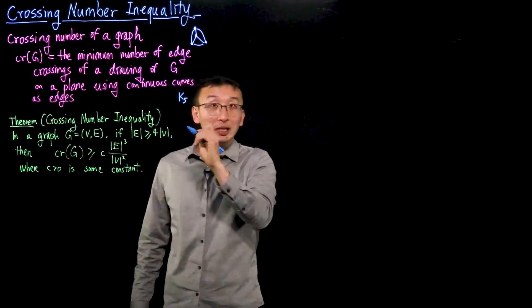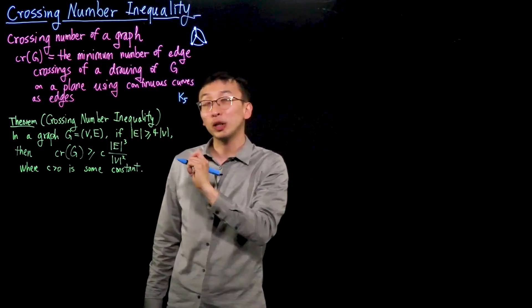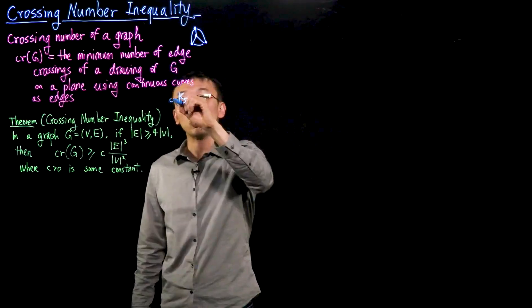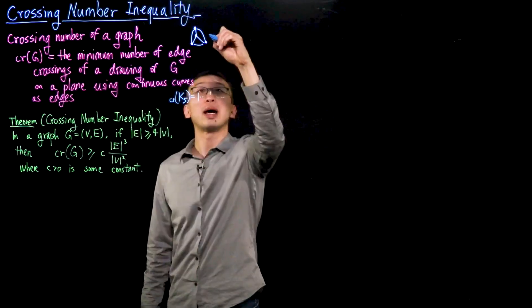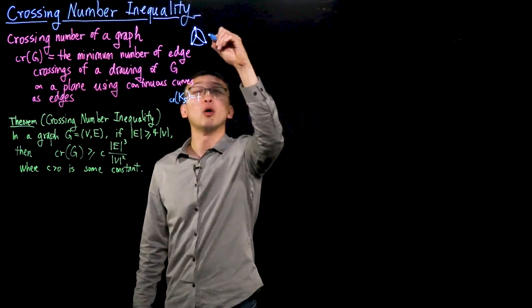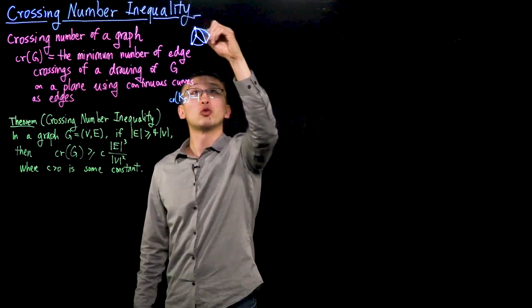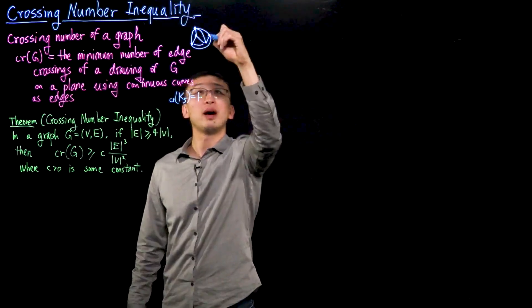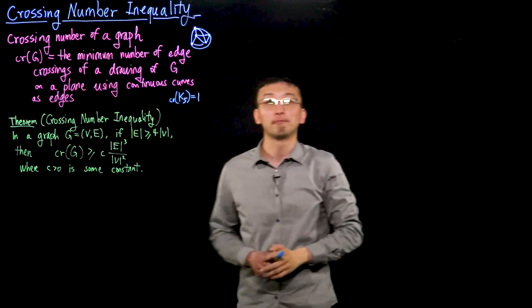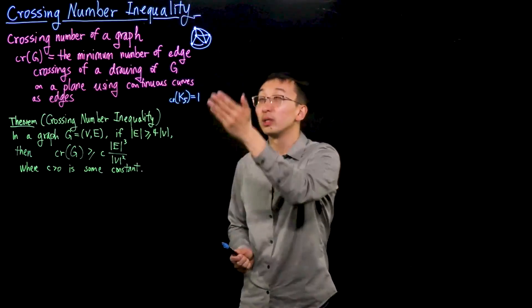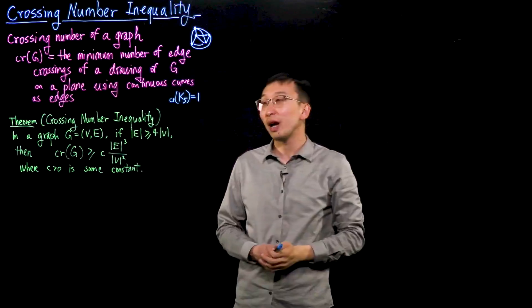It is a classic fact that K5, the complete graph on five vertices, does not have a planar drawing. But it is possible to draw this graph using only one crossing. We can do this by adding one vertex to the K4 drawing, drawing edges accordingly, and the final edge requires one crossing. So this example illustrates that the crossing number of K5 is one.